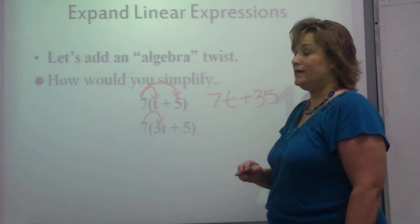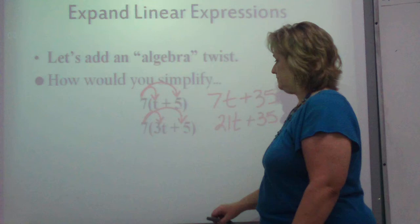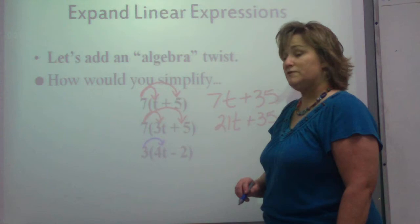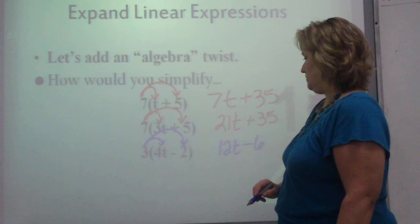Okay? Let's look at another one. Same thing. 7 times 3 is 21t. And then 7 times positive 5 is 35. Give me another color here. 3 times 4t is 12t. And positive 3 times negative 2 is negative 6.